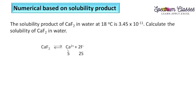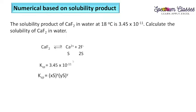Calcium fluoride dissociates to give Ca²⁺ (one mole, so s) and F⁻ (two moles, so 2s). The Ksp given is 3.45 × 10⁻¹¹. The formula for Ksp is [Ca²⁺]¹[F⁻]² = s × (2s)². Here the cation contributes s raised to the power 1, and fluoride contributes 2s raised to the power 2.